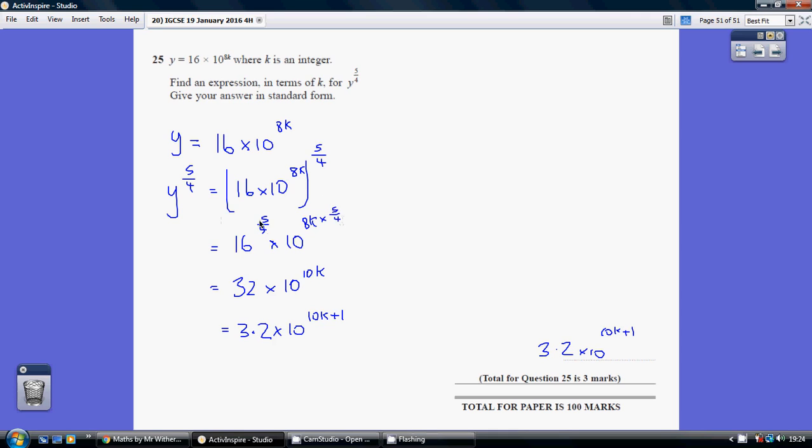So this we can just pop into our calculator and get 32, and here we're just doing 8 times 5 over 4 lots of k, which is 10k. So we've got 32 times 10 to the power of 10k.